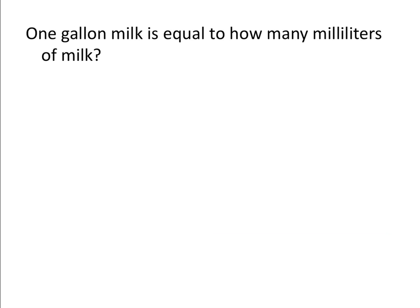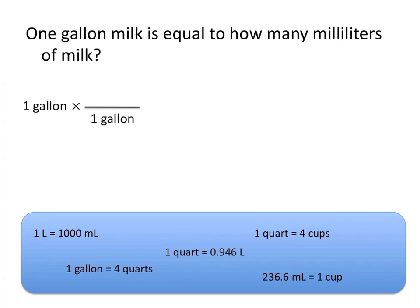Let's try another problem. 1 gallon of milk is equal to how many milliliters of milk? First we start by writing our given quantity, which is 1 gallon. The units we wish to obtain are milliliters. We know that we need to use a conversion factor that has units of gallons in it somewhere, and we want to put gallons on the bottom so that the starting value's gallons and the conversion factor's gallons cancel each other out. Looking at the conversion factors available, 1 gallon is equal to 4 quarts. Because we put gallons on the bottom, we know that 4 quarts goes on the top, allowing us to cancel out the units of gallons. Because we haven't yet obtained units of milliliters, we need to keep going.